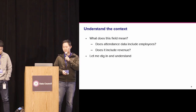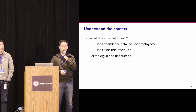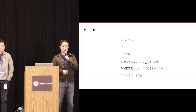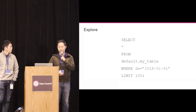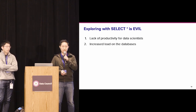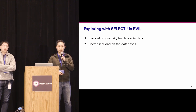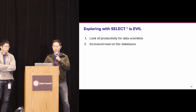For example, there's an attendance field. Does it include employees? This matters because you probably want to figure out revenue from that, and employees shouldn't be included in the revenue. The typical way to understand data is to issue a query — select all from a certain partition — and sample it because there's so much data. The problem with select all is it creates a lack of productivity. Before that, if your system isn't set up, you need to do connection setup and get permissions, wasting a lot of time, and it increases load on databases as the data scientist population grows.